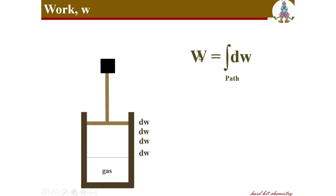It is important to note that we write dw, not delta w, because work is a path function. You cannot say a change in work. You can say change in energy or change in enthalpy because these are state functions. Work is a process-associated path function — you have a work done in a process and that work is a function of the path. That is why the integral specifies the path.